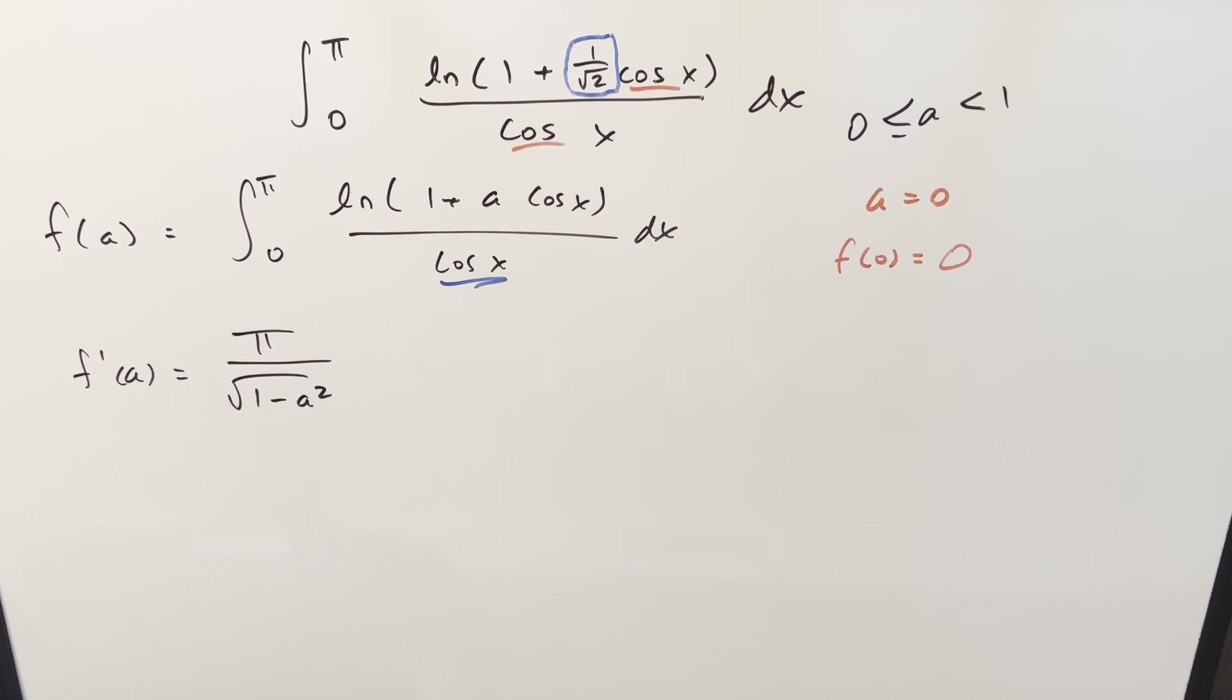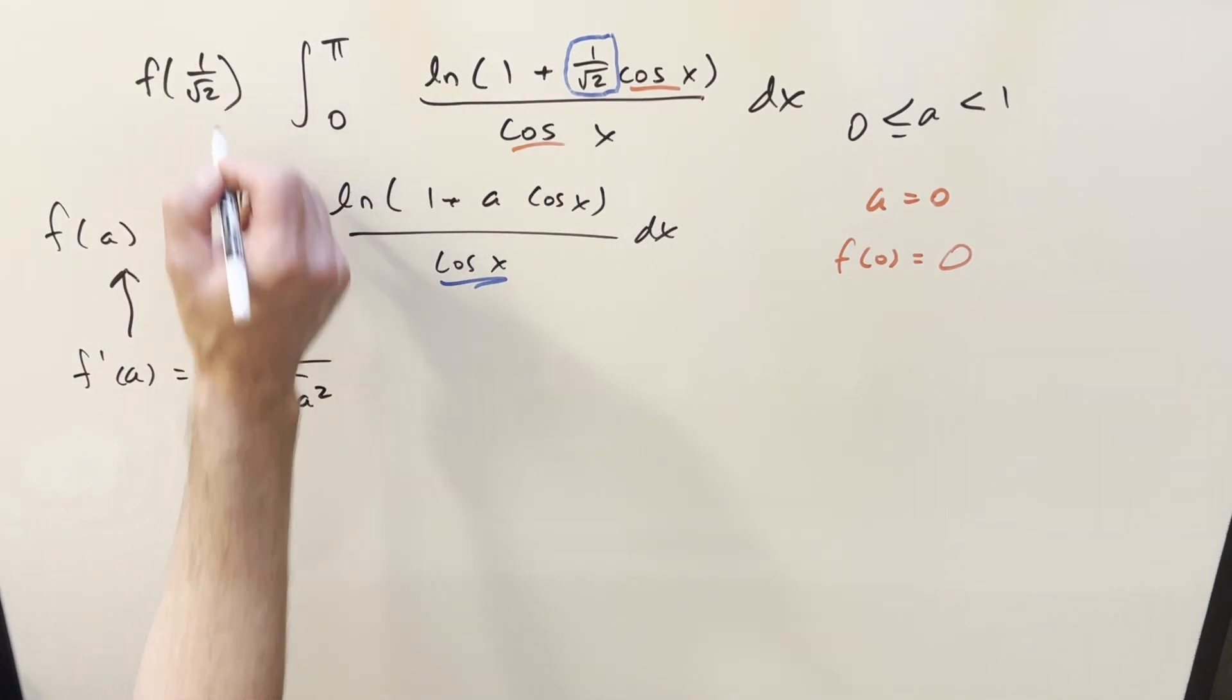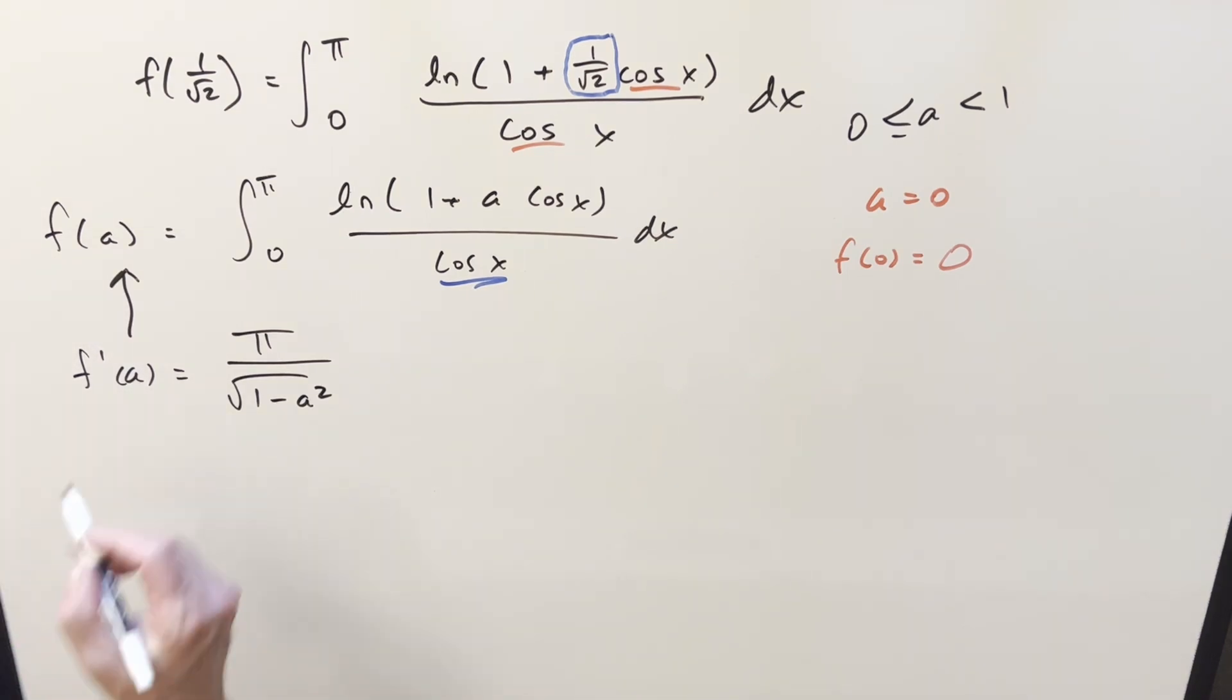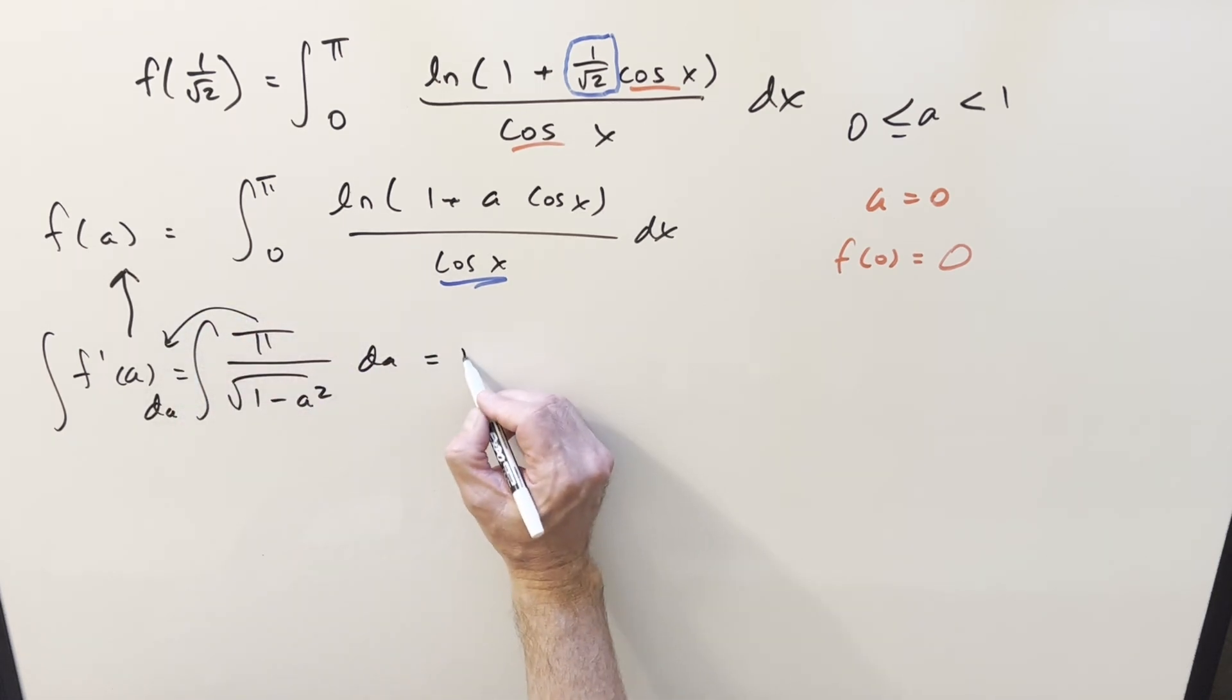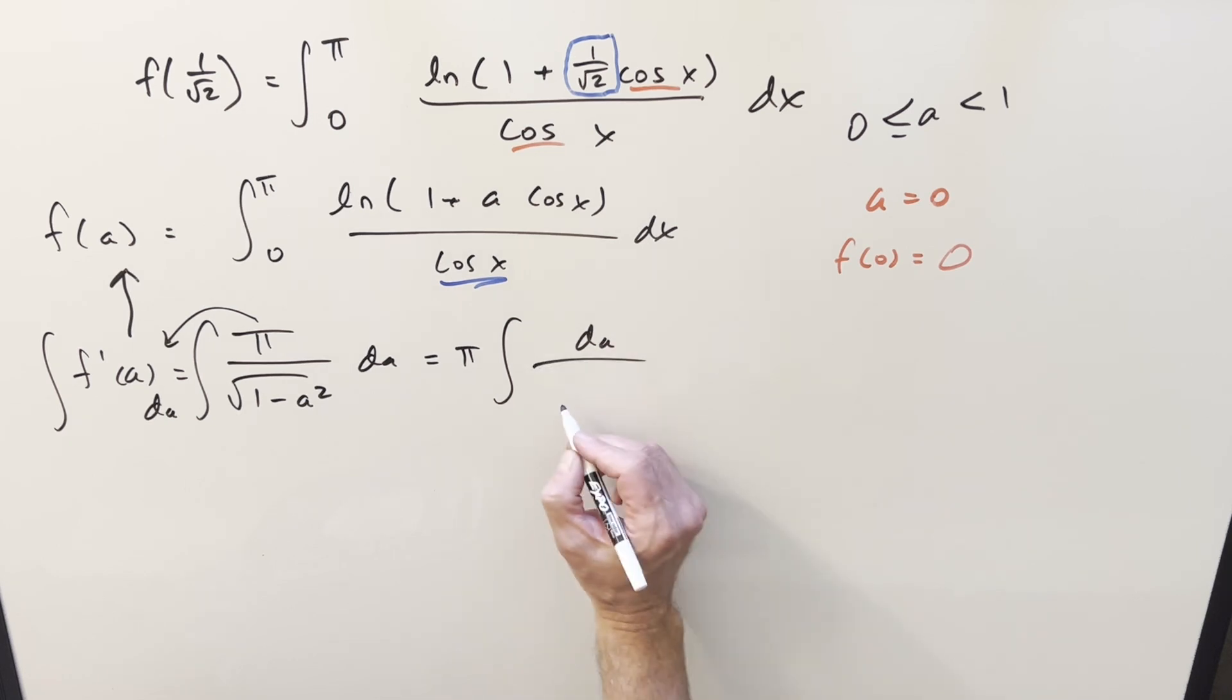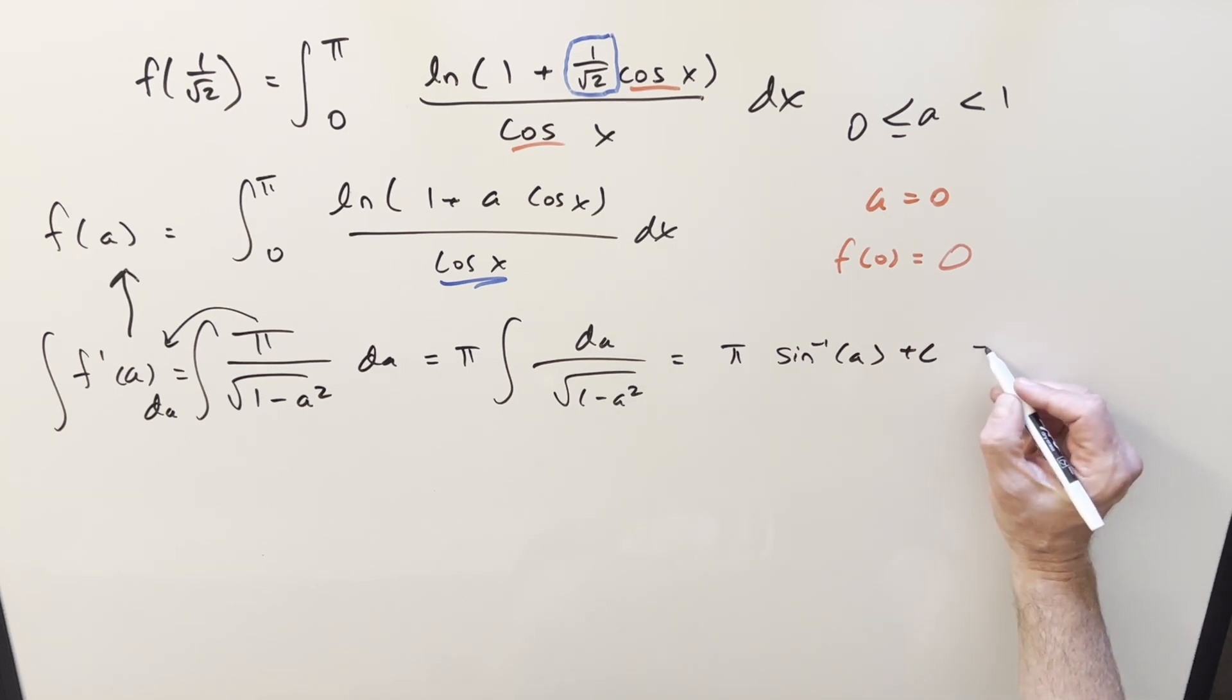And now that we have this value, I just want to remember what we're doing, where we are, who we are, what's the purpose. So we want to get back to f of a, because our ultimate goal is this thing, which is just going to be f of one over square root of two. So to get back to f of a, all I want to do is integrate on both sides, but we're integrating with respect to a here. Pi is just a constant, so I can bring it out front, and we can look at this as pi times the integral d a over square root one minus a squared. But this is just our arc sine formula, so this is going to be just pi arc sine of a plus c. So this is our f of a value.